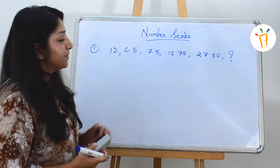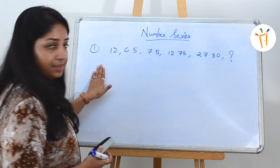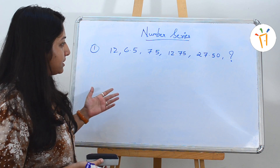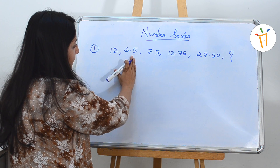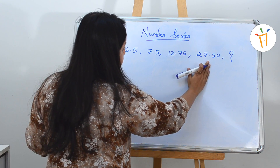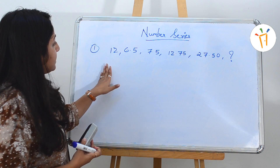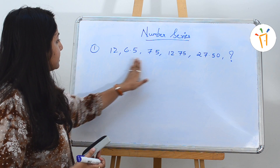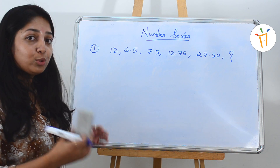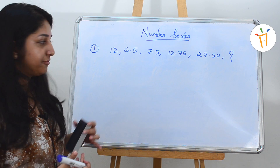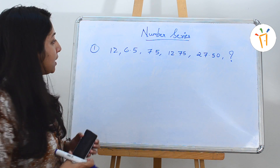Let's start with our first question. This is a series of decimal numbers — that is the first type of series. The numbers are 12, 6.5, 7.5, 12.75, 27.50, and the question is to find the next number in the series. Since this is a series based on decimal numbers, it will most likely be divisible by 0.5 or 1.5. By dividing or multiplying by 1.5 or 0.5 you can find the pattern.